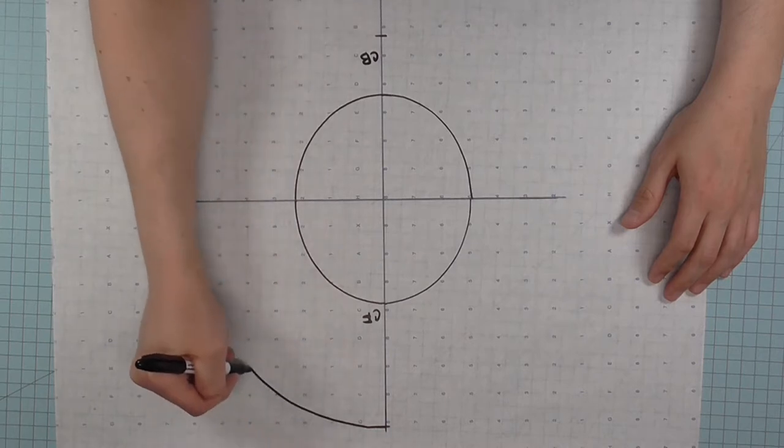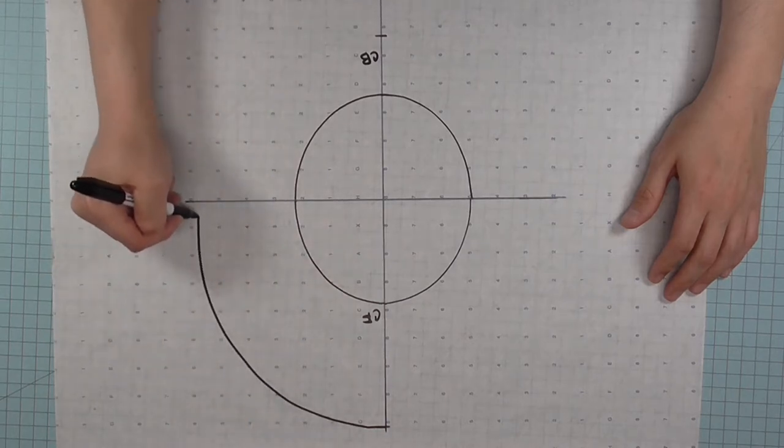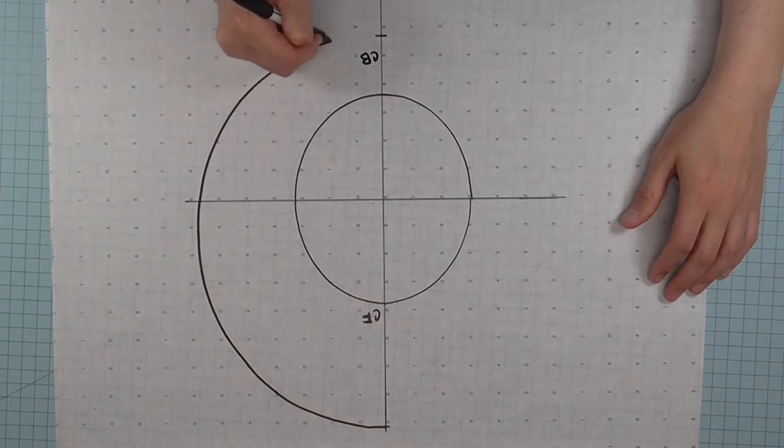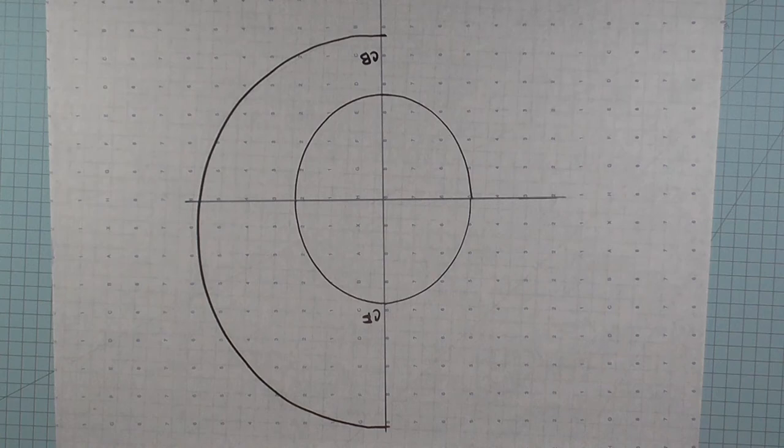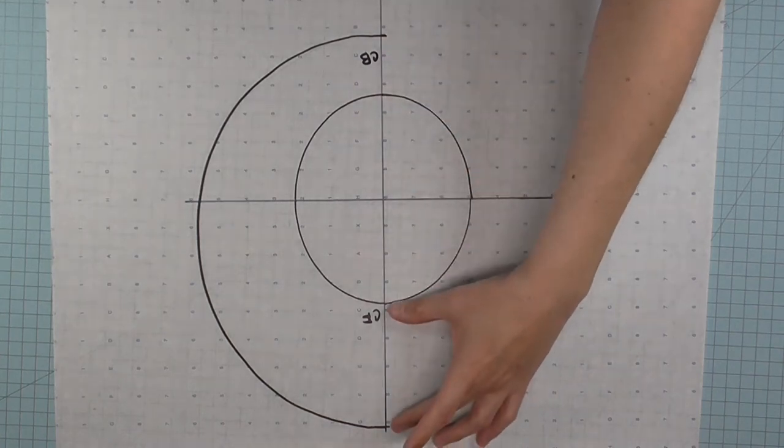But if you want it to be a smooth curve, make sure that you have a 90 degree angle at center front and at center back. This will ensure that the two ends don't form points. It's very obvious at this point that the center back is much shorter than center front.